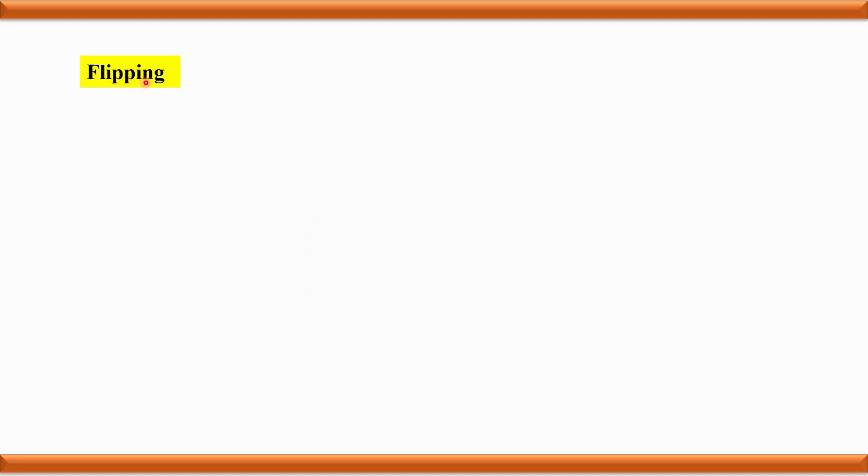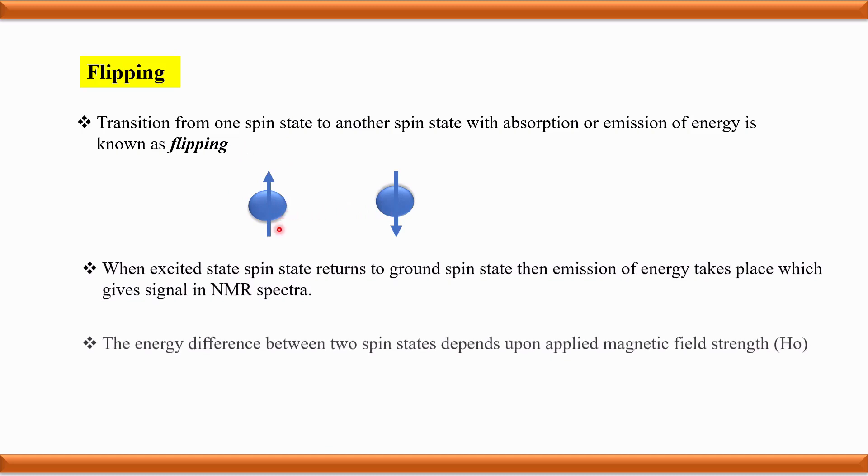What is meant by flipping? Transition from one spin state to another with absorption or emission of energy is known as flipping. The energy difference between these two spin states depends on the strength of the applied magnetic field.